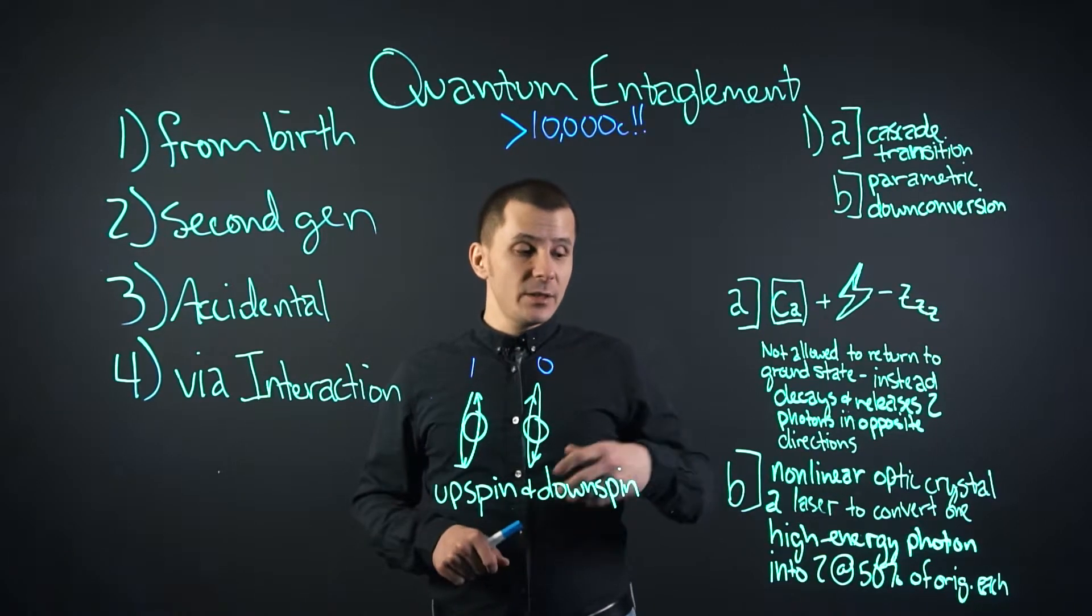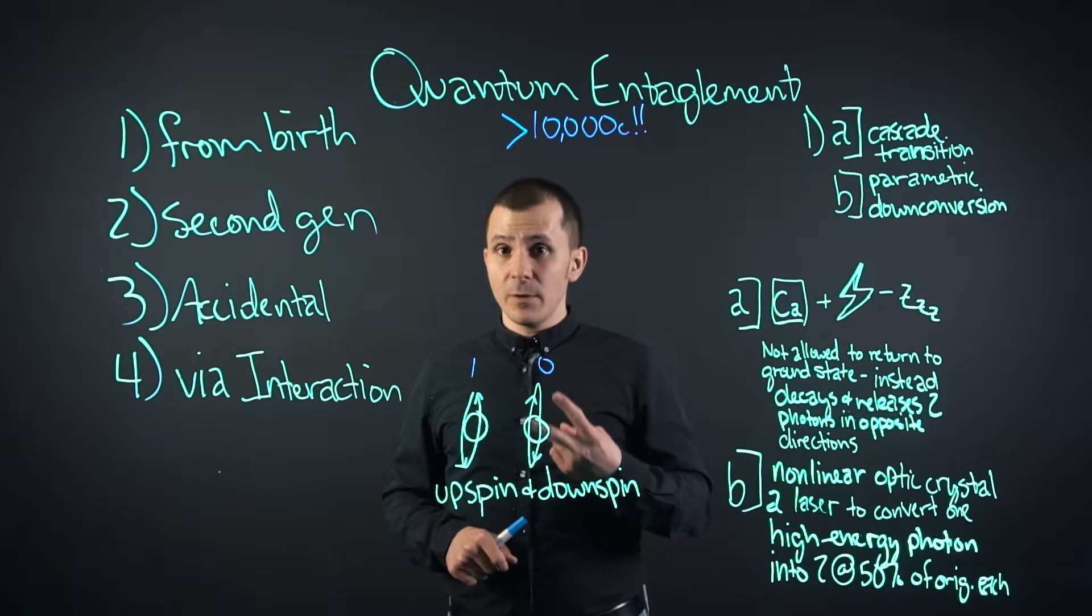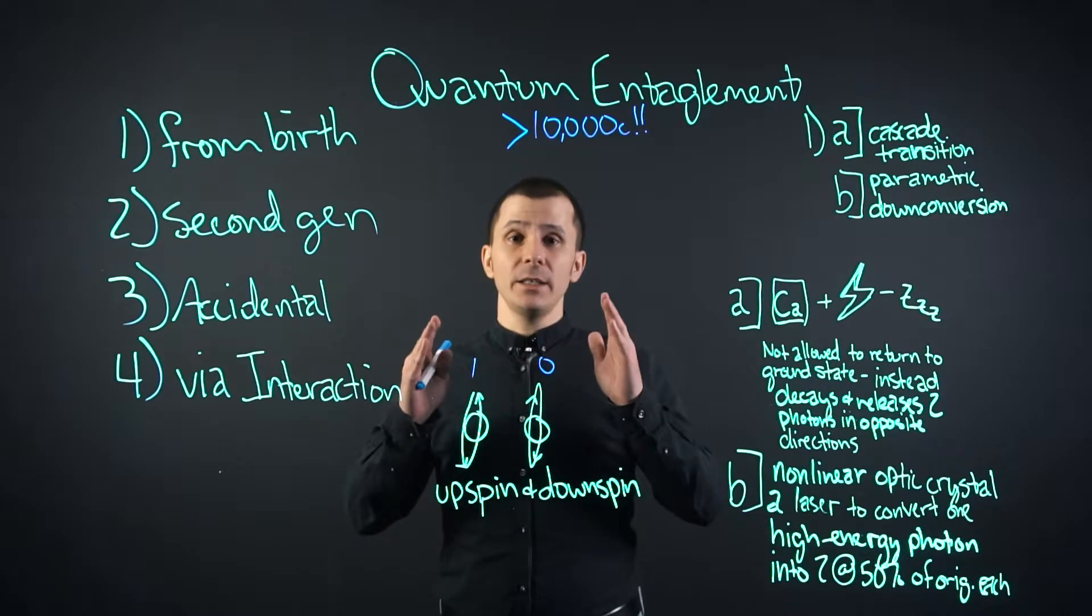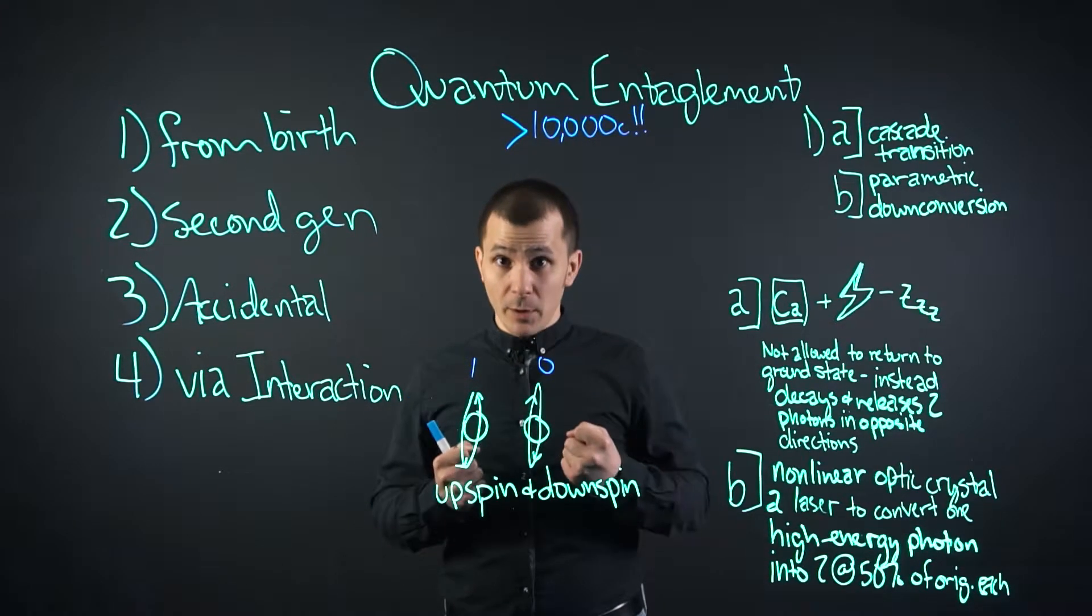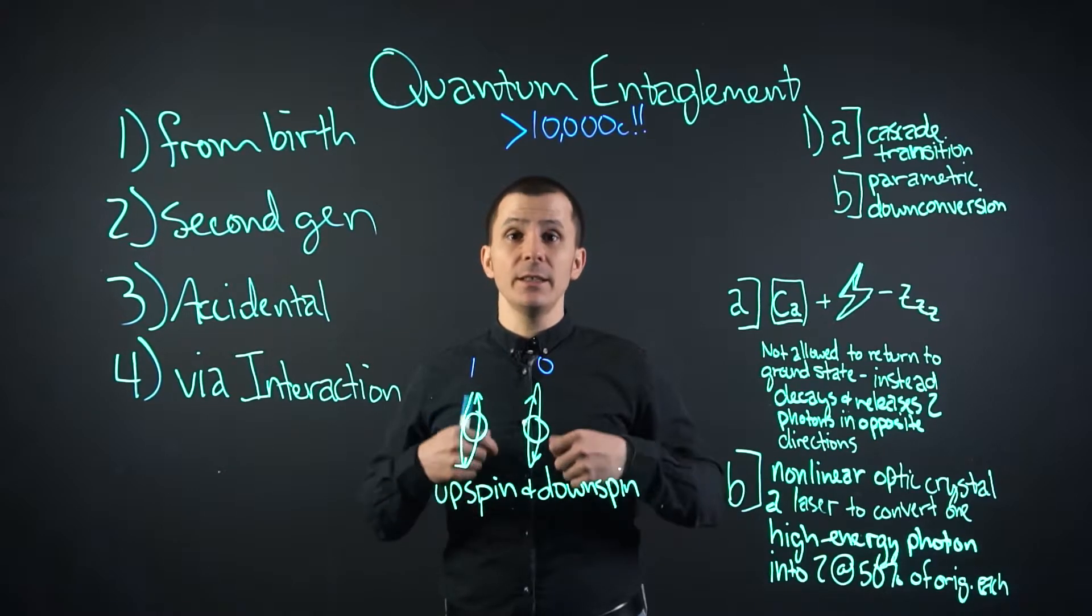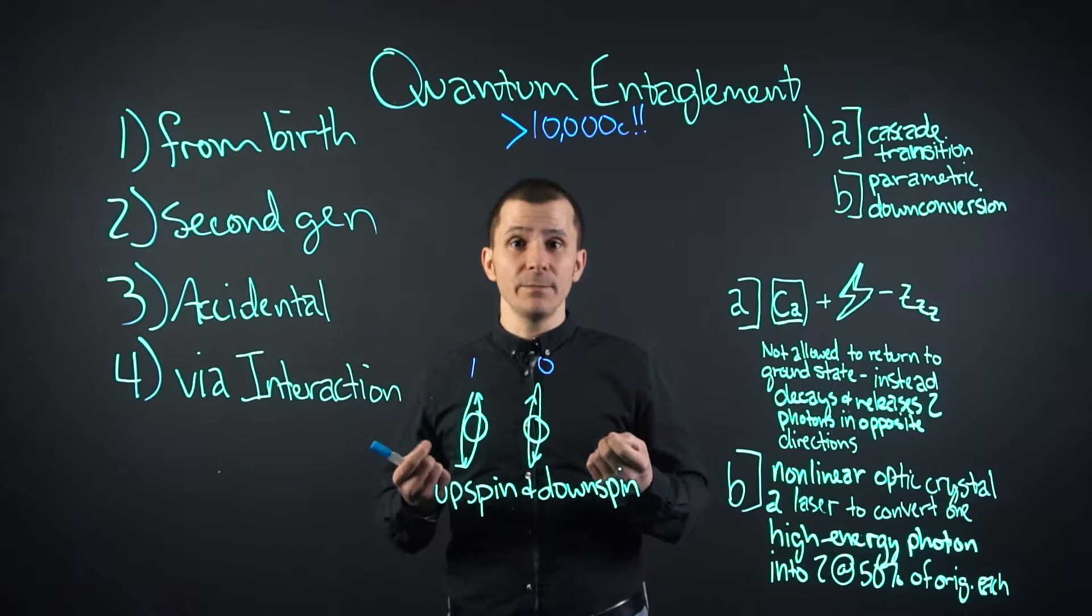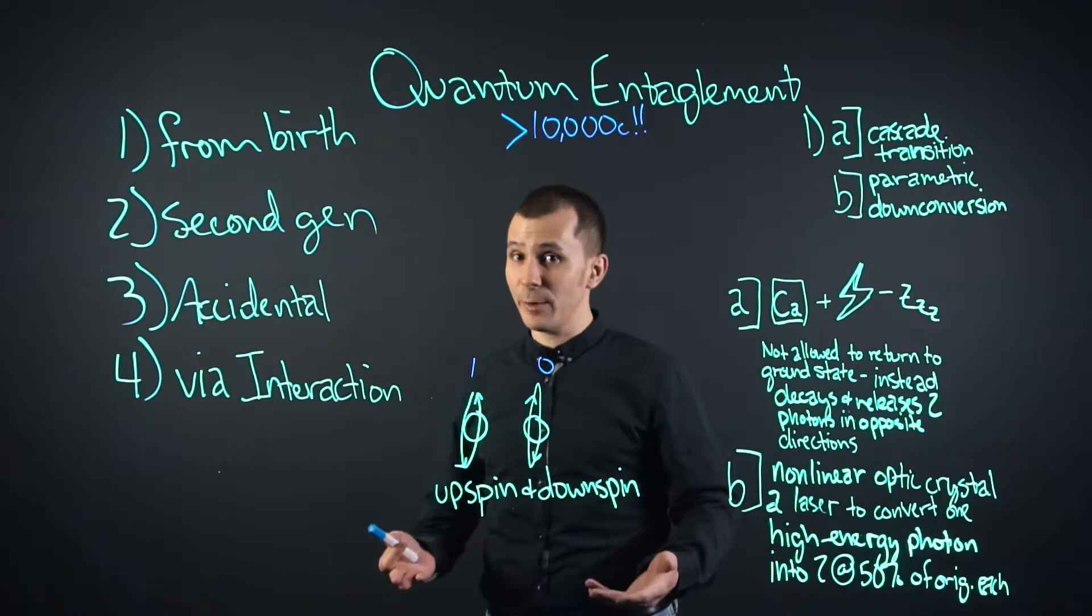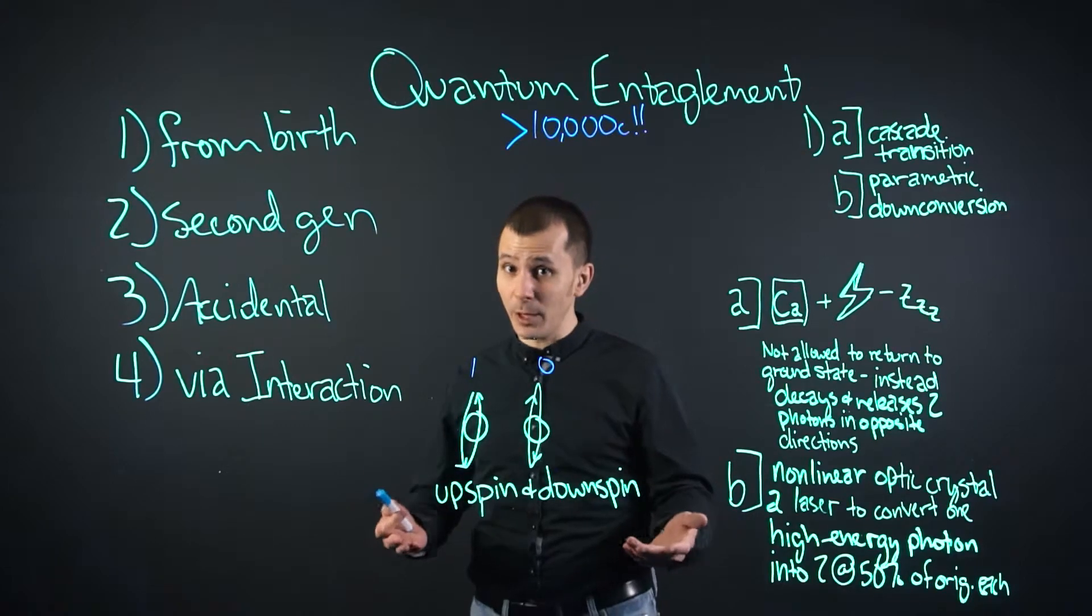Second generation is when you take two quantum entangled photons and fire them at two atoms. These atoms, if able to absorb these photons, then become entangled with each other. Second generation is something we can actually hold onto because photons are always flying around at the speed of light, which is a bit of a problem.